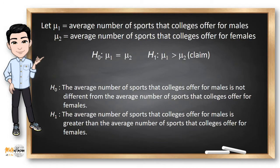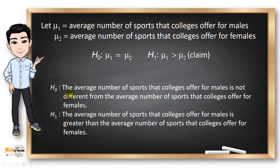Let mu sub 1 be the average number of sports that colleges offer for males and mu sub 2 for females. The null hypothesis tells us there is no significant difference, so mu sub 1 equals mu sub 2. Since we're checking if it's greater, the alternative hypothesis is mu sub 1 greater than mu sub 2 — meaning the average number for males is greater than for females.